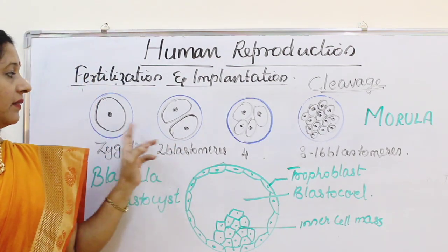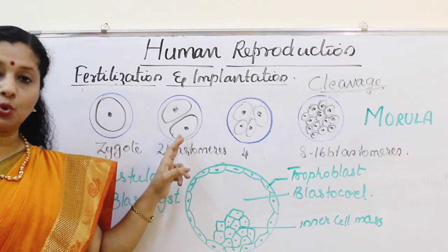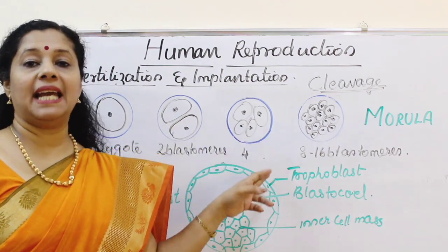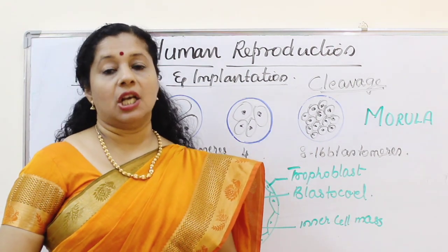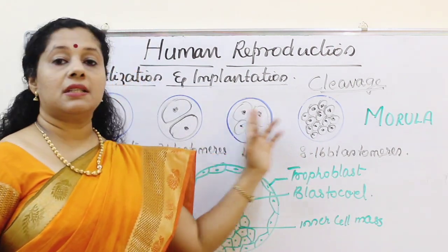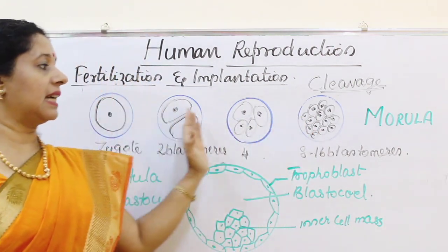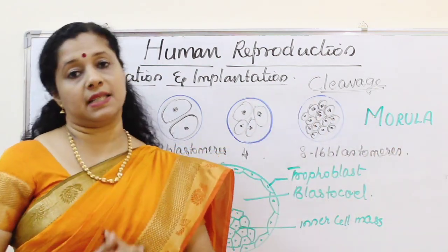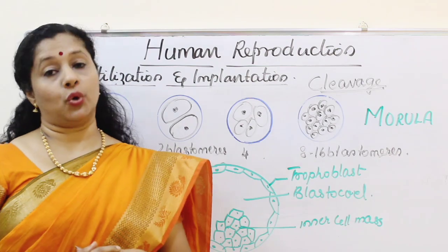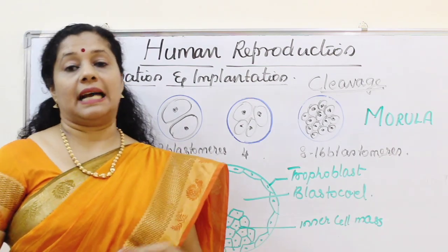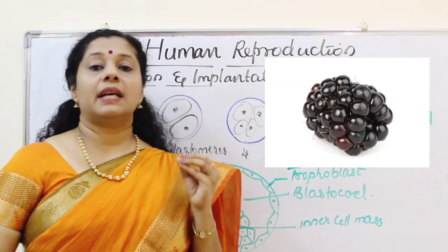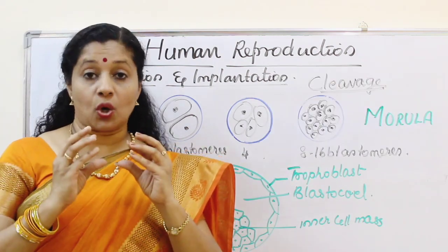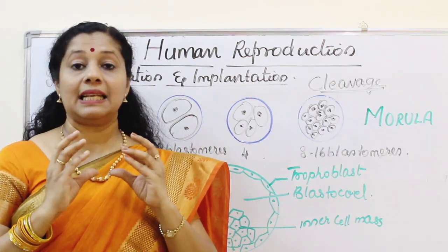In cleavage, the zygote first divides into two blastomeres, two become four, four become eight, and then sixteen cells. The sixteen-cell stage is reached by the first, second, third, or fourth day. This solid mass of sixteen cells is called a morula — from Latin, meaning mulberry — because it looks like a mulberry fruit.